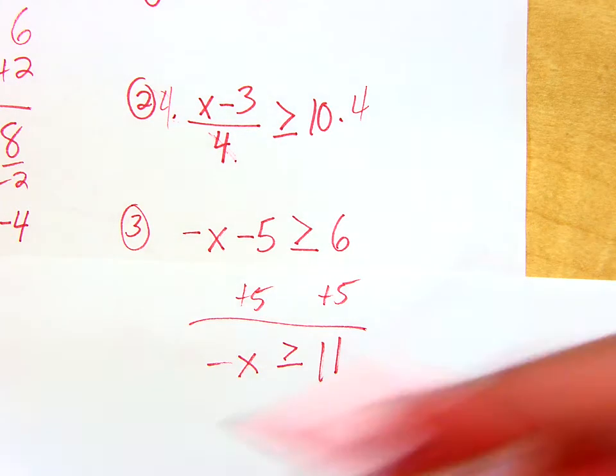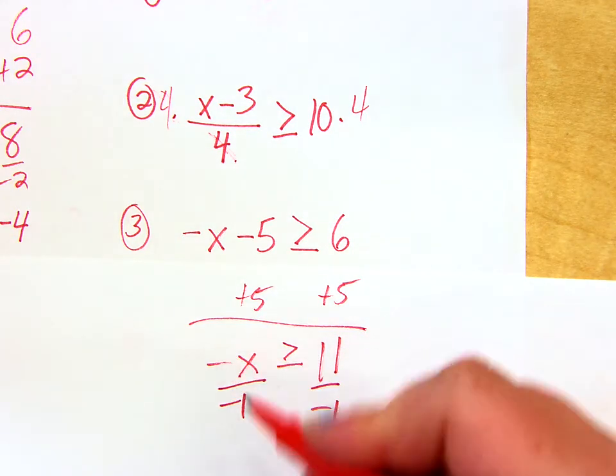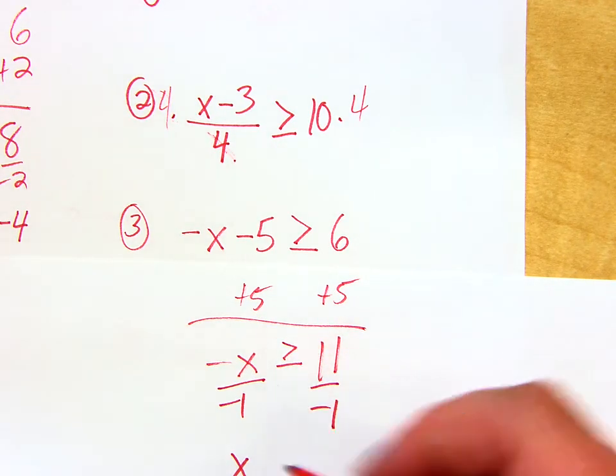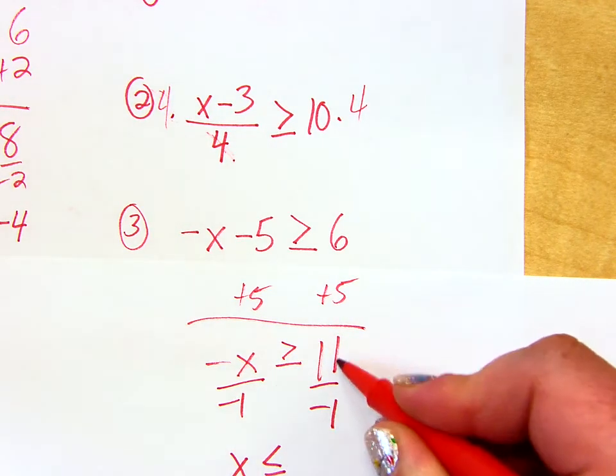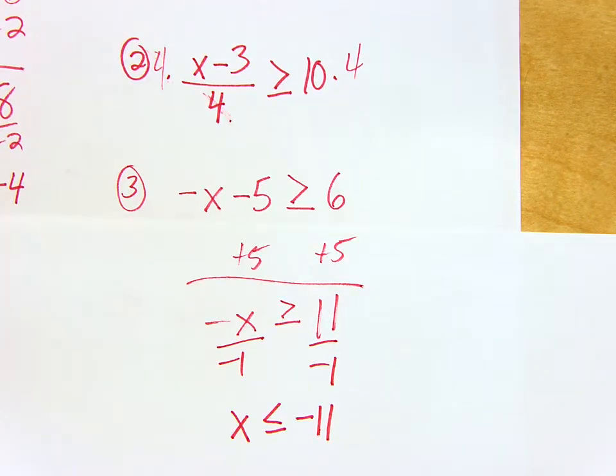Right? So usually I like to divide. So if I divide both sides by negative 1, now I have a positive x. But what happens with this? Flip it over. And now I have 11 divided by negative 1, negative 11. So there's your answer for that one.